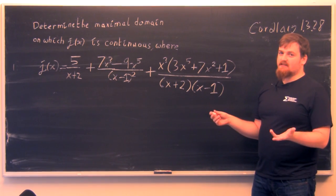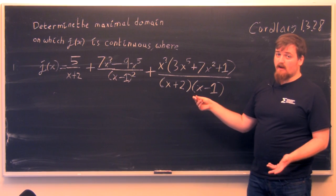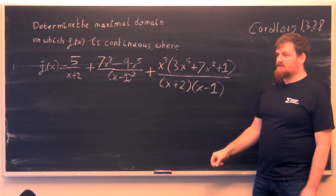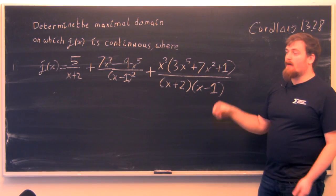So therefore, that means that the maximal domain on which j(x) is well-defined, and therefore continuous, is just all real numbers except minus 2 and 1.